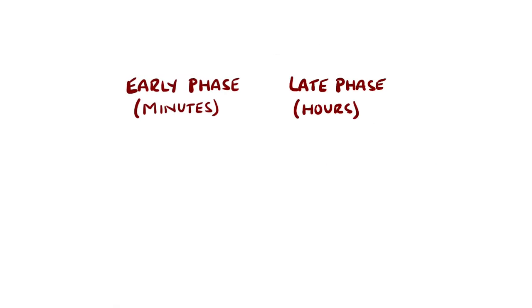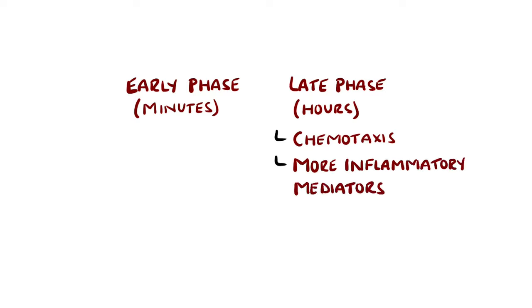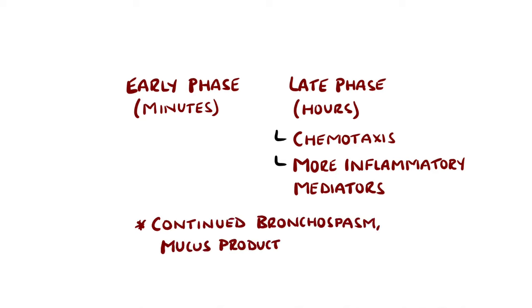The release of all these inflammatory mediators leads to more inflammatory cells being recruited from the blood over the next few hours, known as chemotaxis, and further production of inflammatory mediators, giving the second phase of the exacerbation, termed the late response.